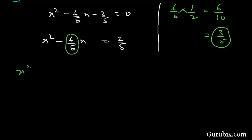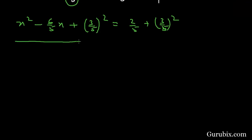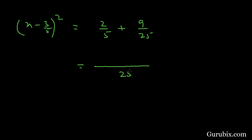This gives us x² minus 6/5 x plus (3/5)² on the left-hand side, and 2/5 plus (3/5)² on the right-hand side. We write the left-hand side as the whole square (x minus 3/5)². On the right-hand side, (3/5)² equals 9/25. Taking 25 as the LCM, 2/5 becomes 10/25. So 10/25 plus 9/25 equals 19/25.